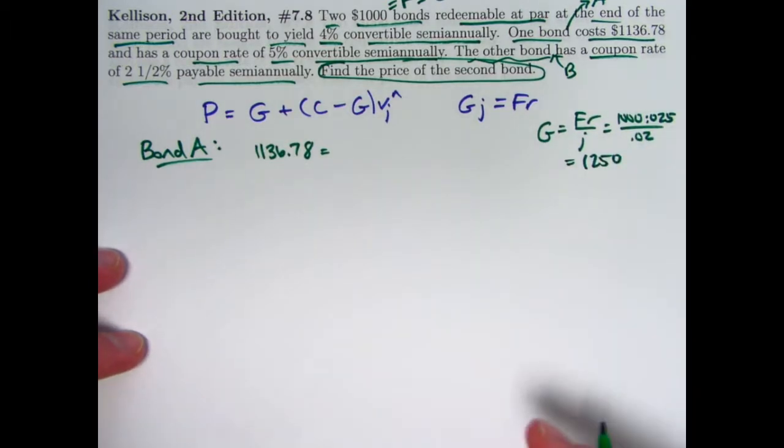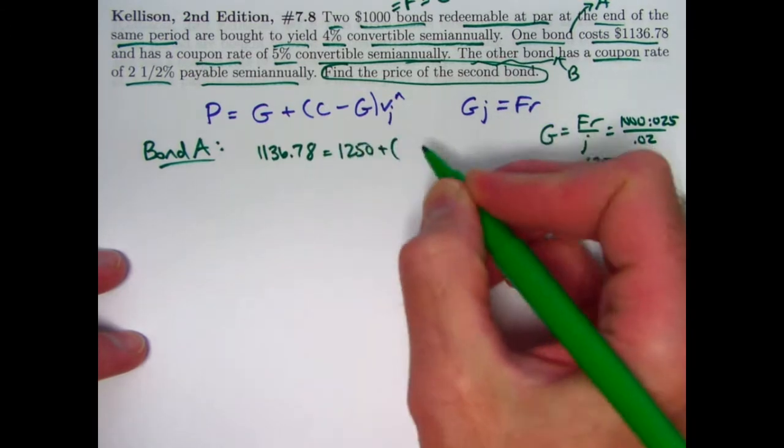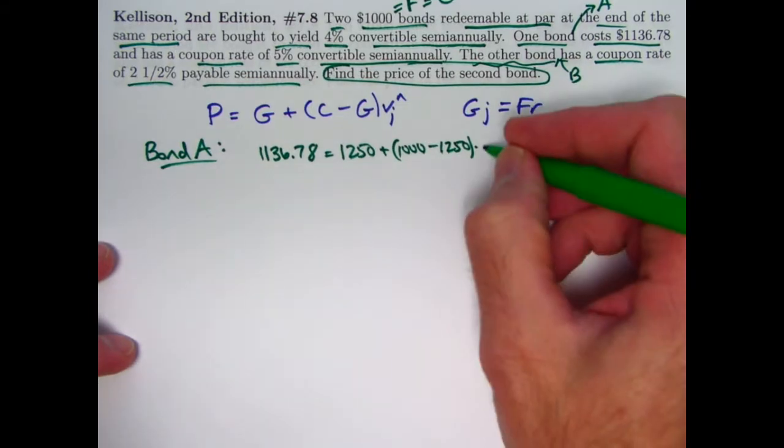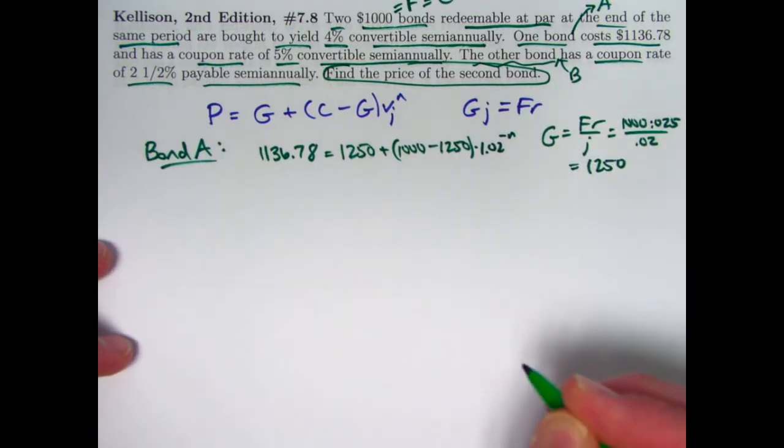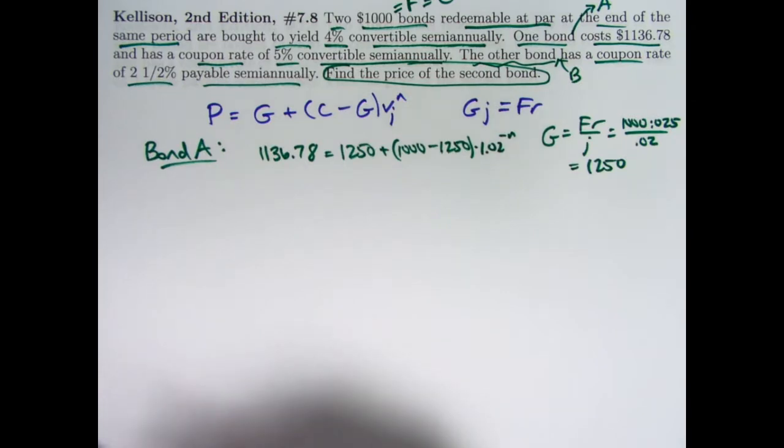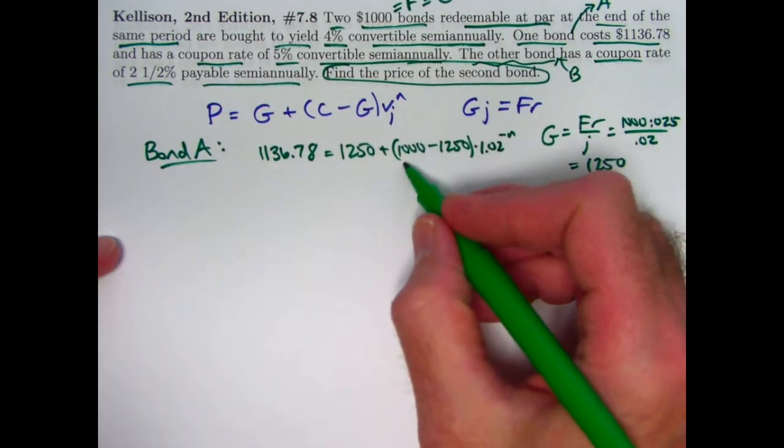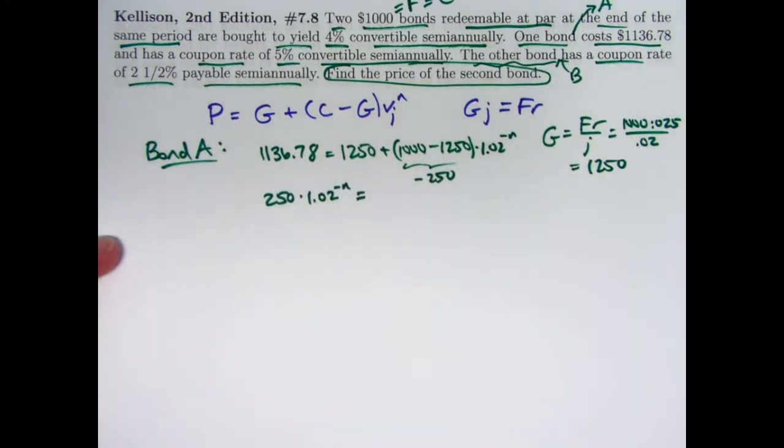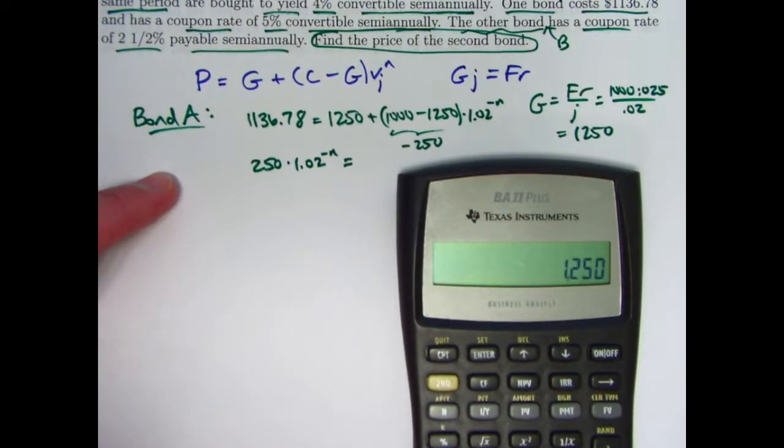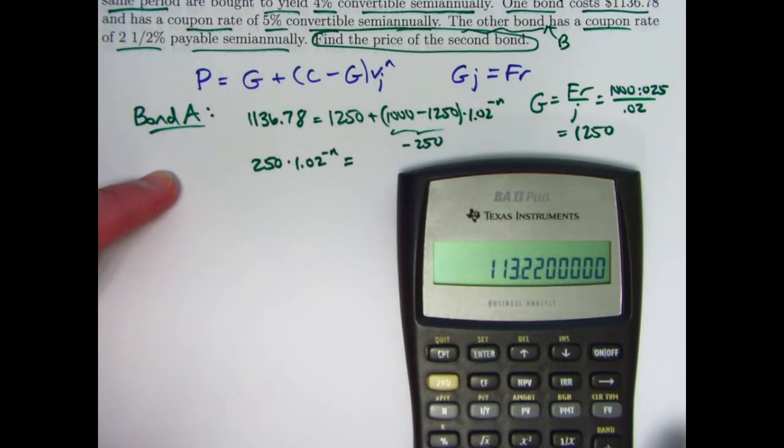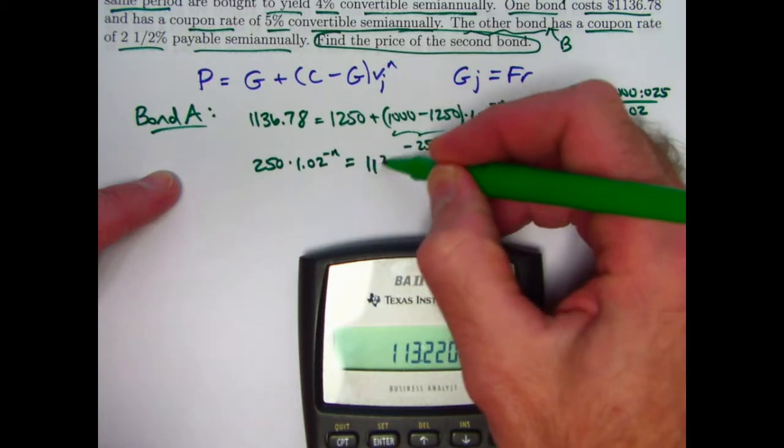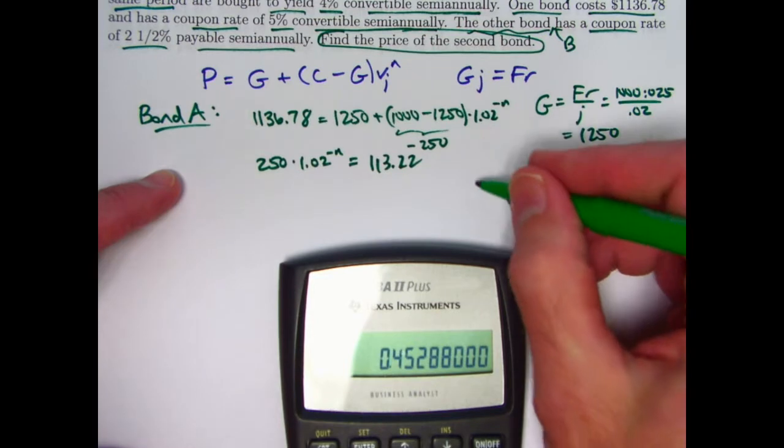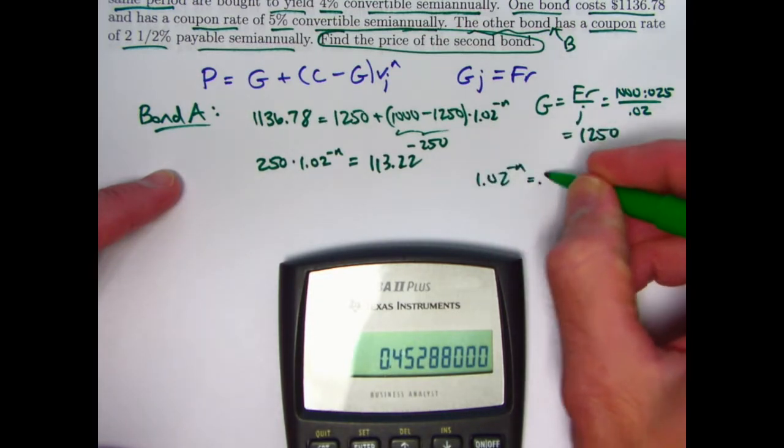I won't bother with the dollar symbols. So this becomes 1250 plus C is 1000 minus 1250. V is 1 over 1.02. I'm going to raise that to the n power. I can also write that as 1.02 to the negative n power. And if I'm going to solve for the price of bond B with the same formula, the base amount formula, I will need to know n. So we need to solve this for n. This is negative 250 here. So I can rearrange. I can say 250 times 1.02 to the negative n power is 1250 minus 1,136.78, which is 113.22. Divide both sides by 250. And you get 1.02 to the negative n equals 0.45288.